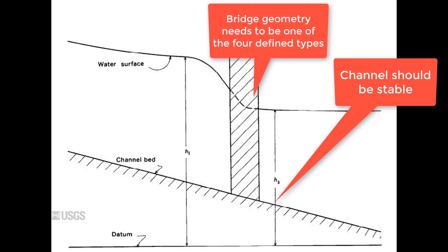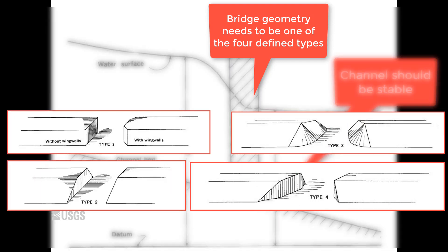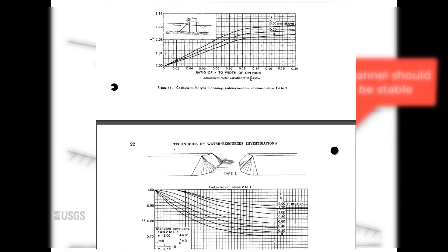Two, the bridge geometry should be reasonably close to one of the four defined types in TWRI Book 3, Chapter A4. Since this method relies on the fact that real-world conditions are comparable to those that were extensively studied in a laboratory setting, the bridge geometry at the contracted section will need to be similar to the standard or modified types specified in the TWRI manual. If no type matches your bridge, use engineering judgment to select the type to be used. This is important because each type defines certain ratios for each type of contraction and their effect on the discharge coefficient.